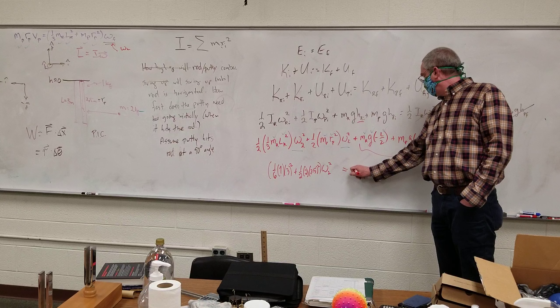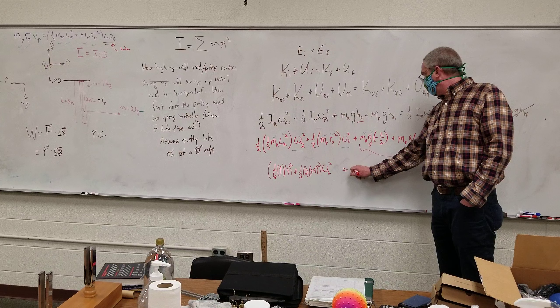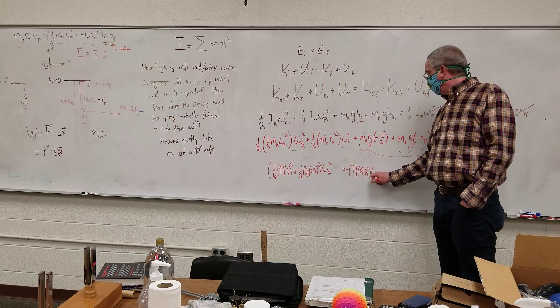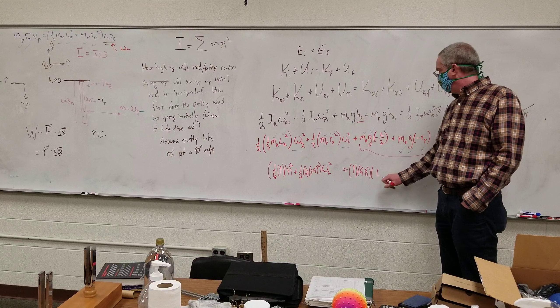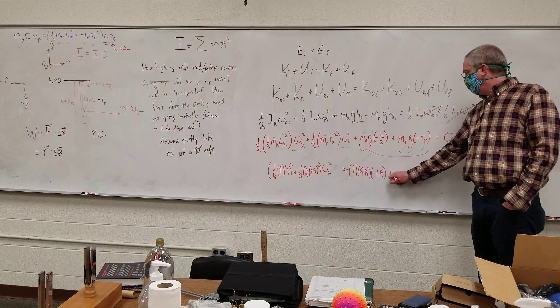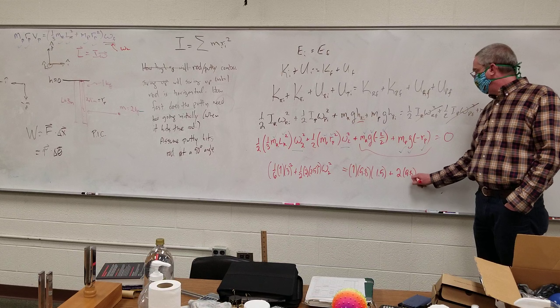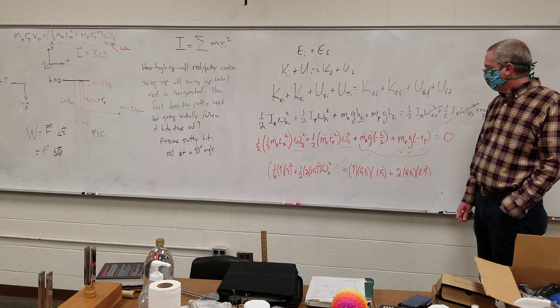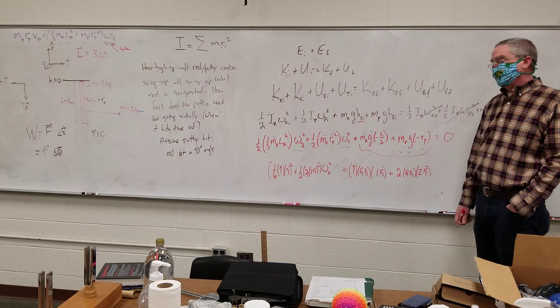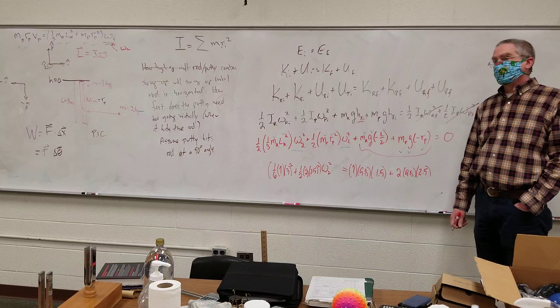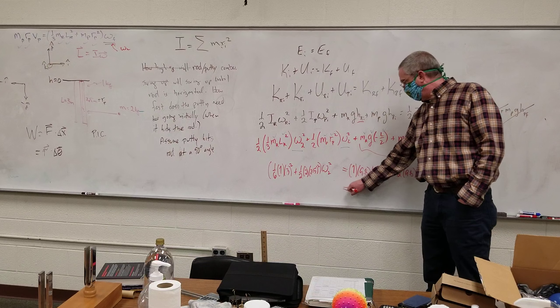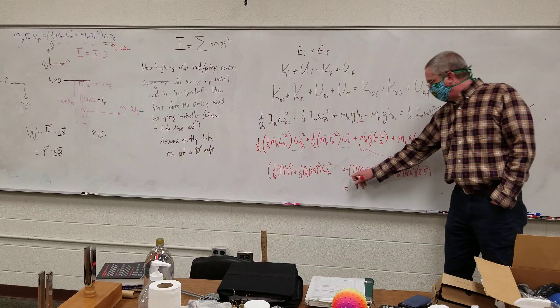And on this side, I've got mass of rod, which is 1, times 9.8, times negative 1.5, plus 2, times 9.8, times 2.5. Would it be negative 9.8? G is always a positive number. Say always, unless there's anti-gravity.